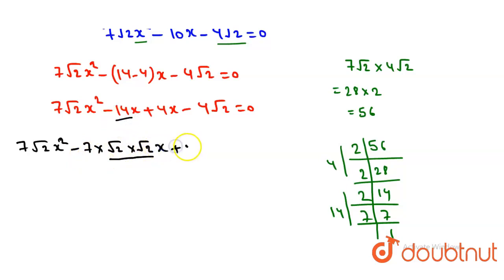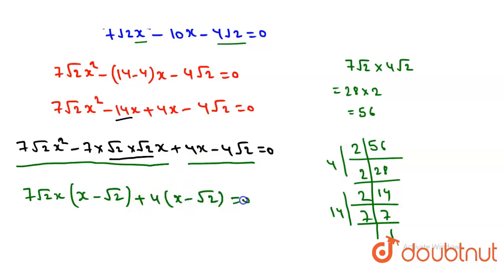In the first two terms we take common 7√2x, leaving x - √2. In the last two terms we take common 4, giving us x - √2. Now we take common x - √2 from both groups.